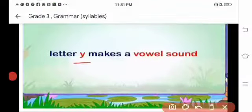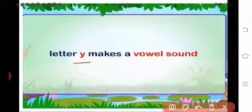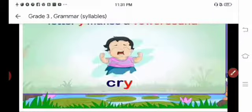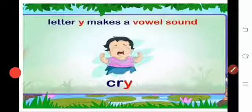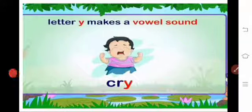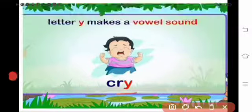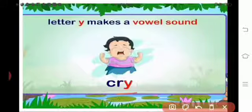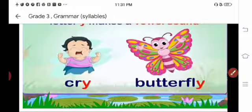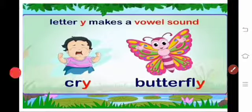Next, you see the letter Y — the letter Y makes a vowel sound. There is the word 'cry': C-R-Y. Here Y is given, but the sound that comes is 'ee.' So the 'ee' sound is the vowel sound — cry has one syllable.